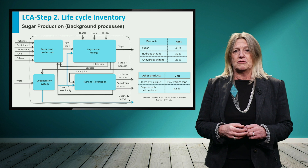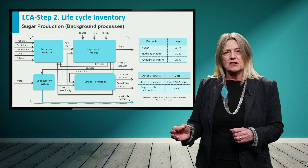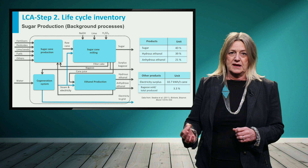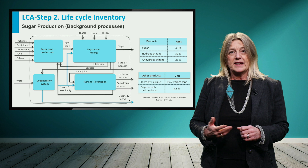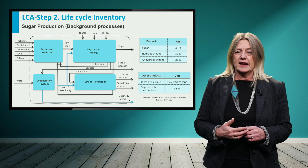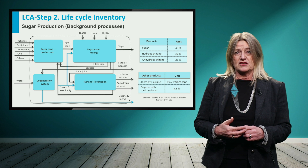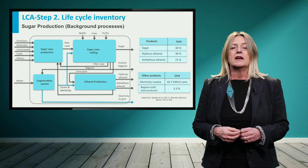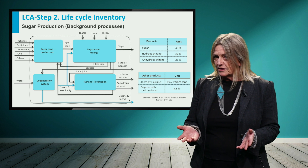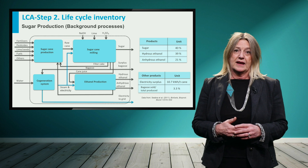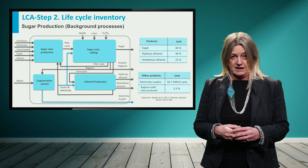ISO 14044 recommends to avoid allocation by either subdivision or system expansion, which means reducing the multi-product system to single product systems. The second option is to allocate the environmental impacts by partitioning based on physical relationships like mass or energy allocation. The authors of the LCA study for the Brazilian sugarcane industry use the second option. They also analyze the effects of energy and economic allocation on the LCA results.